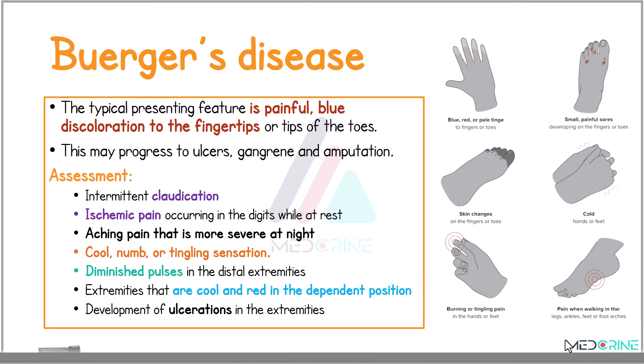In the clinical presentation of Buerger's disease, patients typically present with a painful bluish discoloration of the fingertips or tips of the toes, and if untreated, this can progress to ulceration, gangrene, and ultimately amputation. This type of amputation is known as auto amputation.